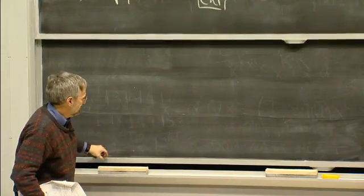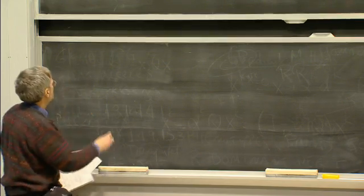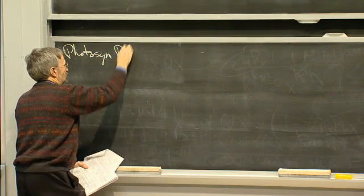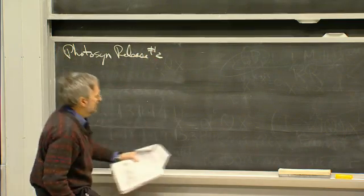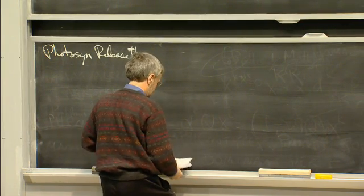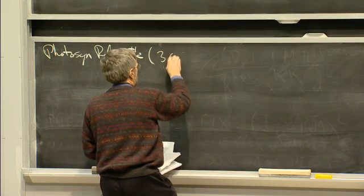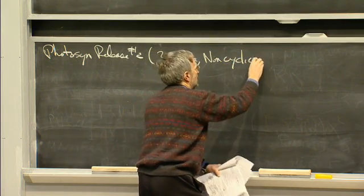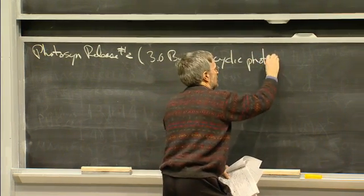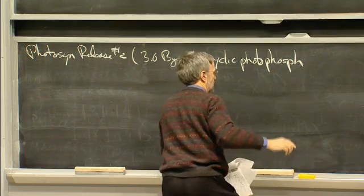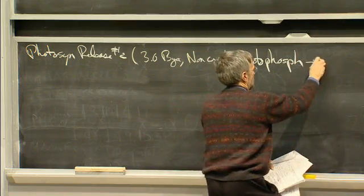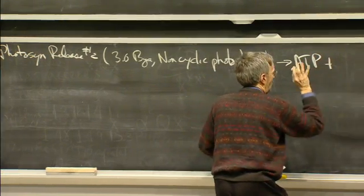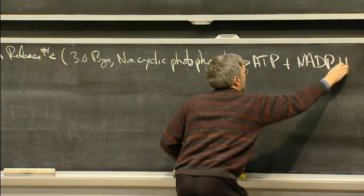However, a better system came up, evolved in evolution. This was the one I somewhat flippantly called photosynthesis release 2 when I was talking. This is known as, probably came up, who knows, again, but maybe 3 billion years ago. And it's known as non-cyclic photophosphorylation. And what's important about this system, and why it's an improvement over the other, is it uses the energy in sunlight to make ATP, just as we've learned. But it also uses the energy in sunlight to make NADPH.